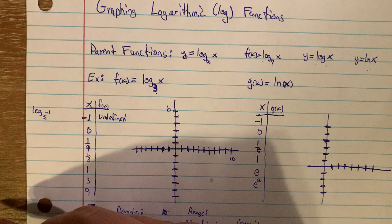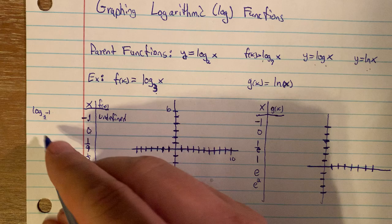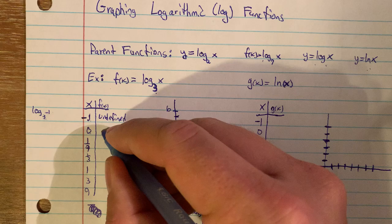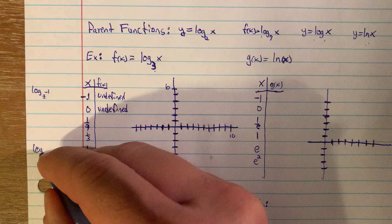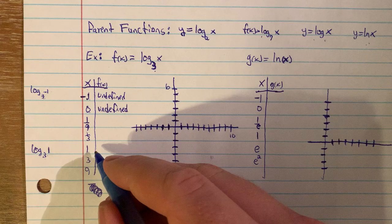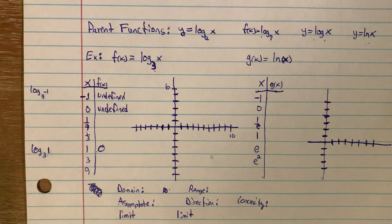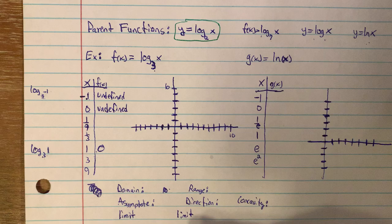When x is negative 1, log base 3 of negative 1 is asking: 3 to what power gives you a negative number? The answer is this is undefined — you can't ever take the log of a negative number. There is no exponent you can put on 3 to get to negative 1. The same is true of 0: you can't raise 3 to any power to get 0. Don't confuse that with log base 3 of 1, which equals 0.